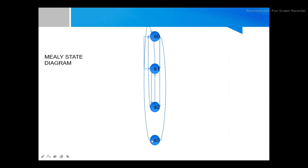For 15 cents, inserting coins takes the machine to S3. From S3, if everything is done it goes back to S2, and then eventually returns to S0. S1 is 5 cents, S2 is 10 cents, S3 is 15 cents. That is the ideology of the Mealy state machine we are going to use.